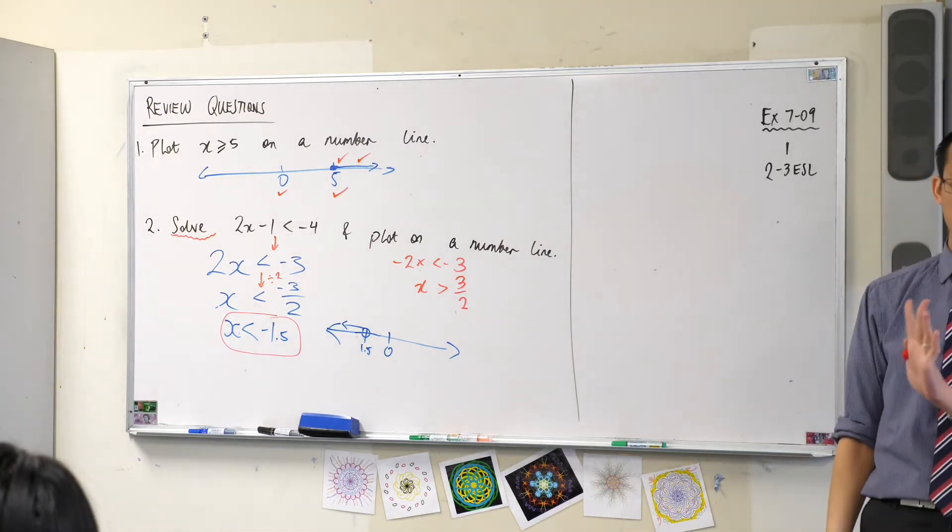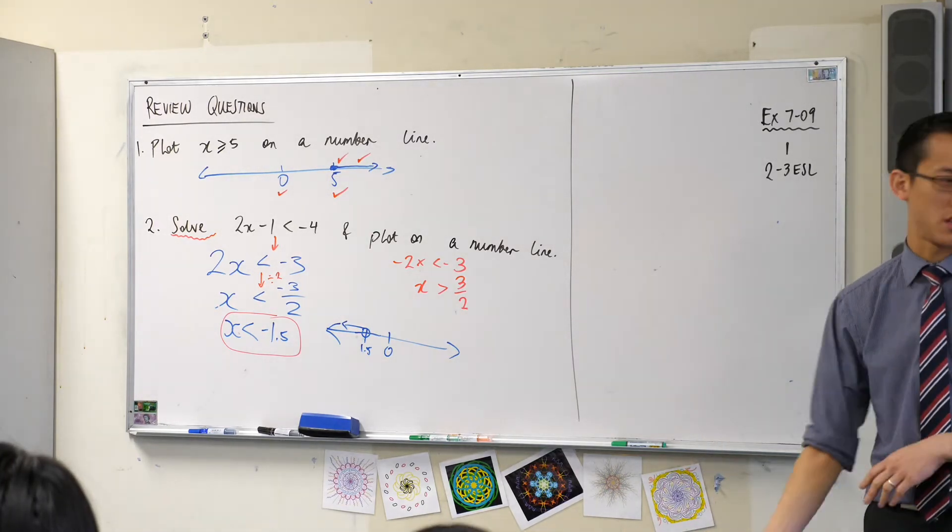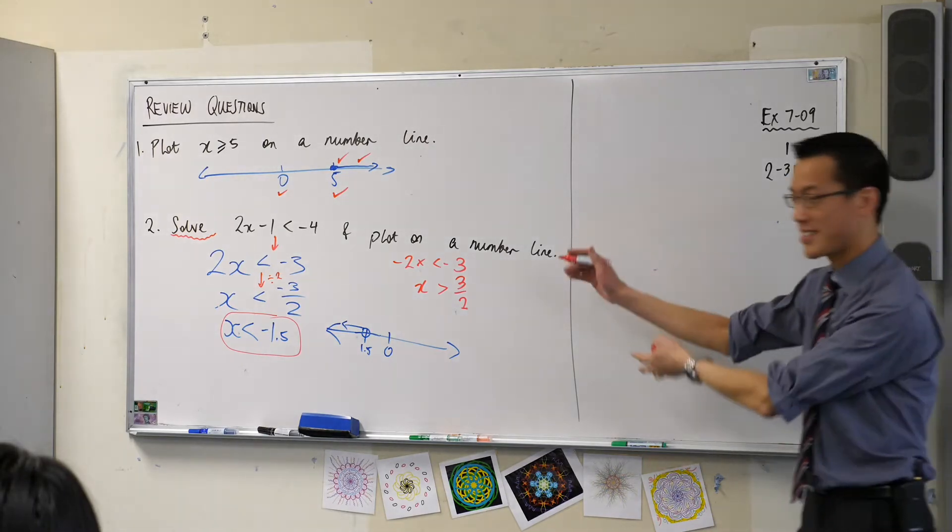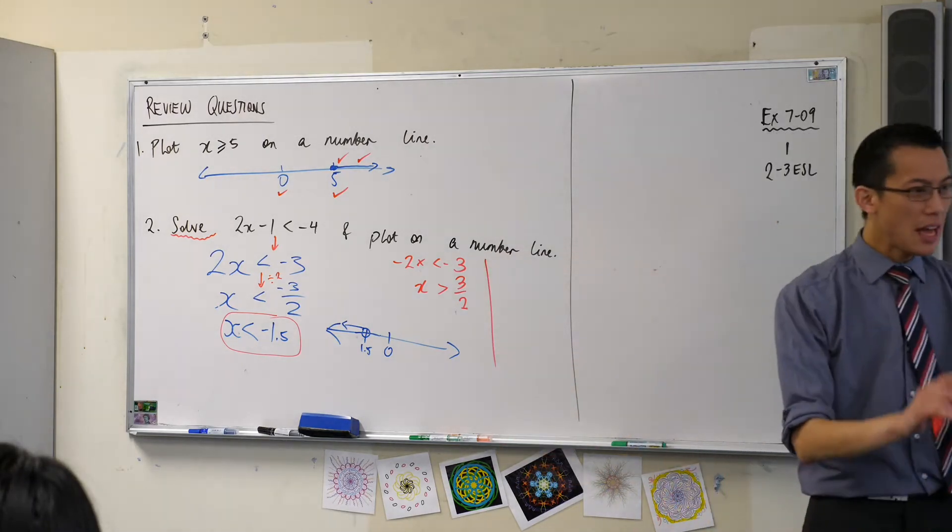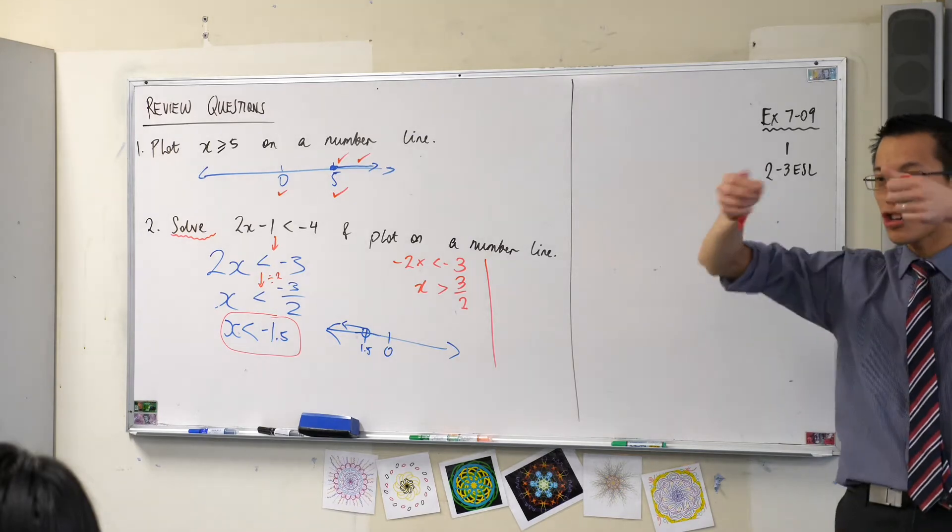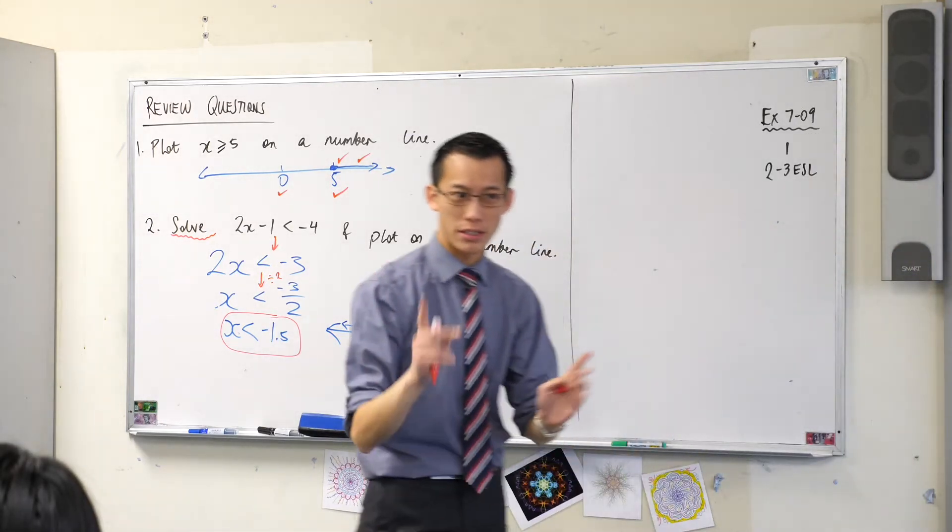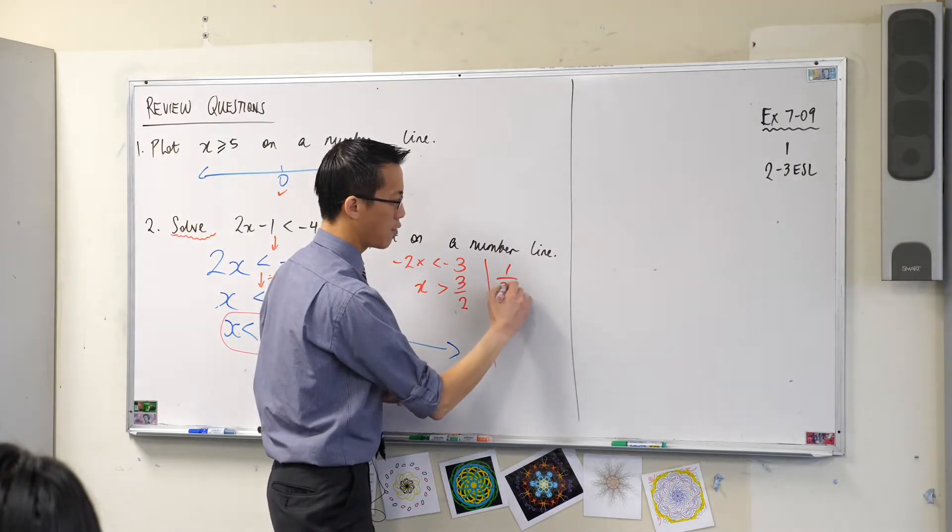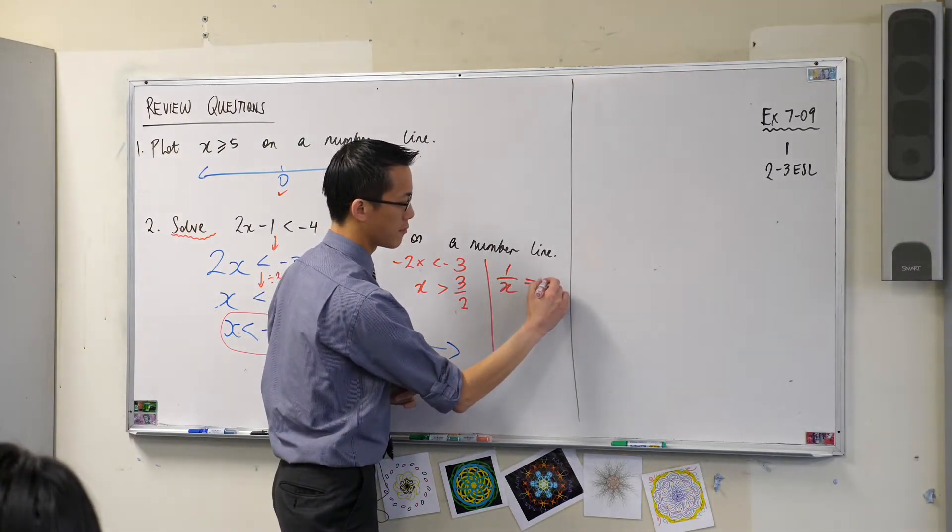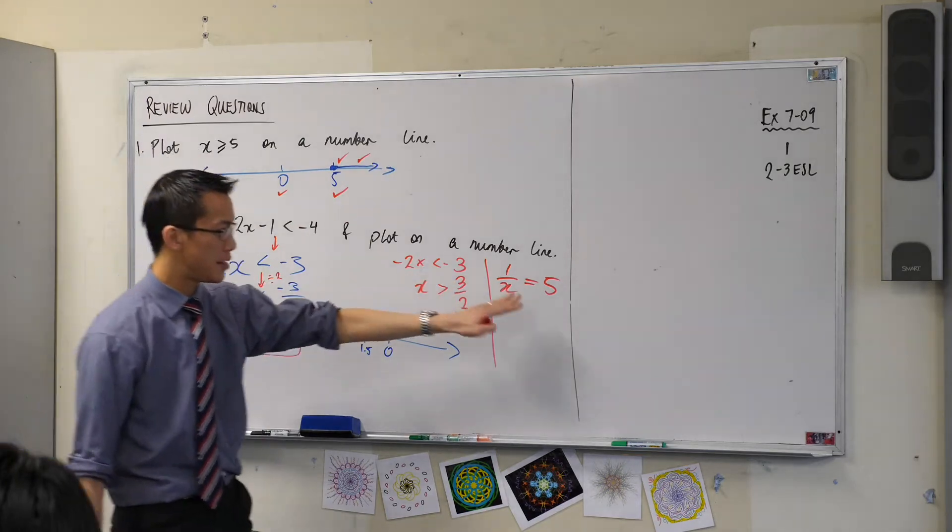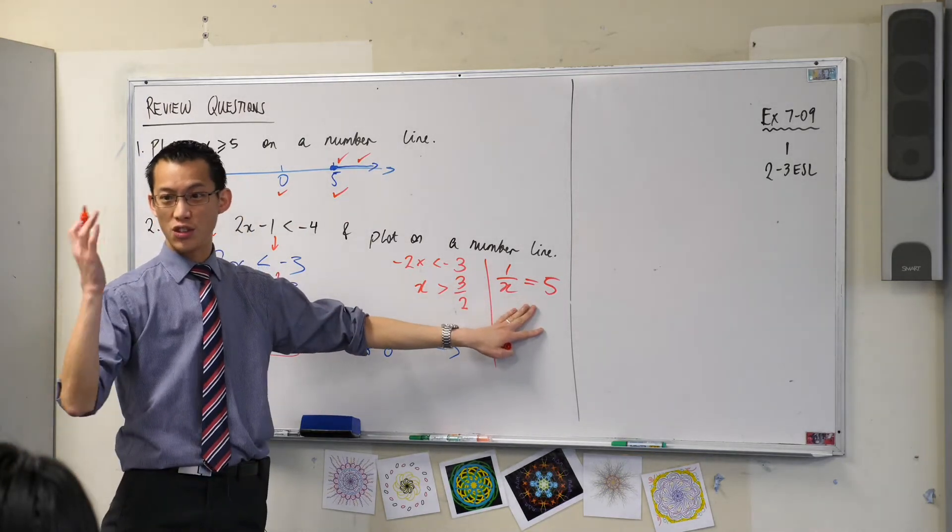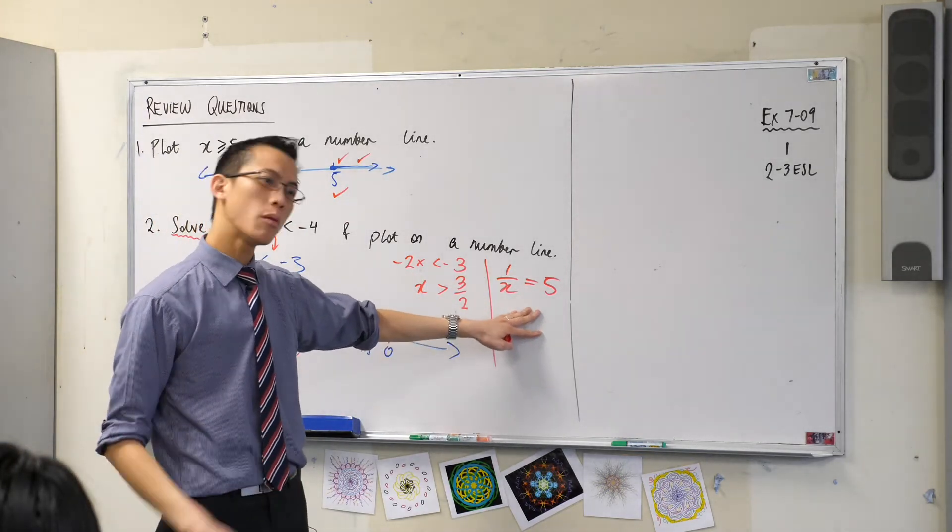Now something that wasn't mentioned yesterday, and to be honest you won't really have to deal with it until next year probably, but it's worth mentioning in the same moment is, there's one other example of a thing you can do to both sides that requires you to change the inequality. So for example, if I gave you this, if I gave you this equation, and I asked you can you solve for X, what would you do?